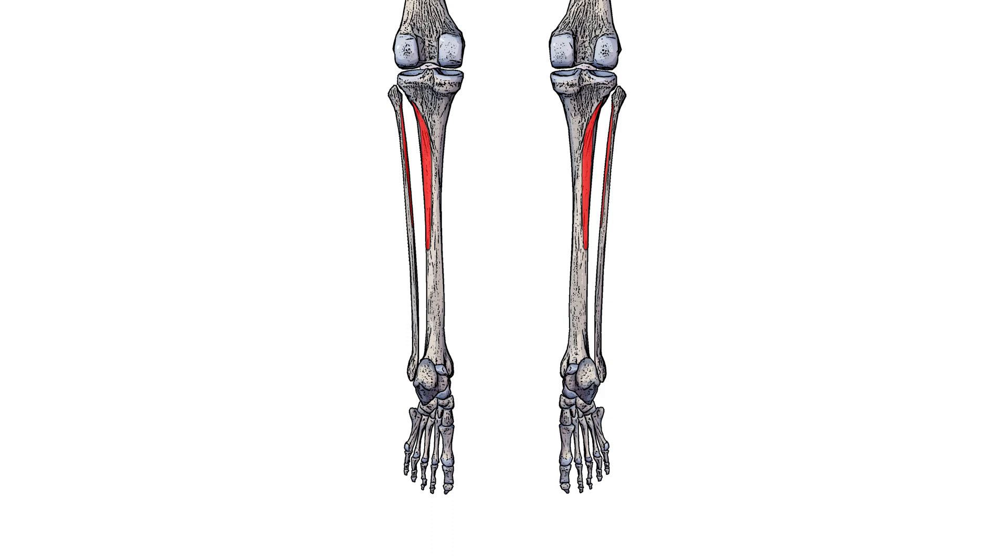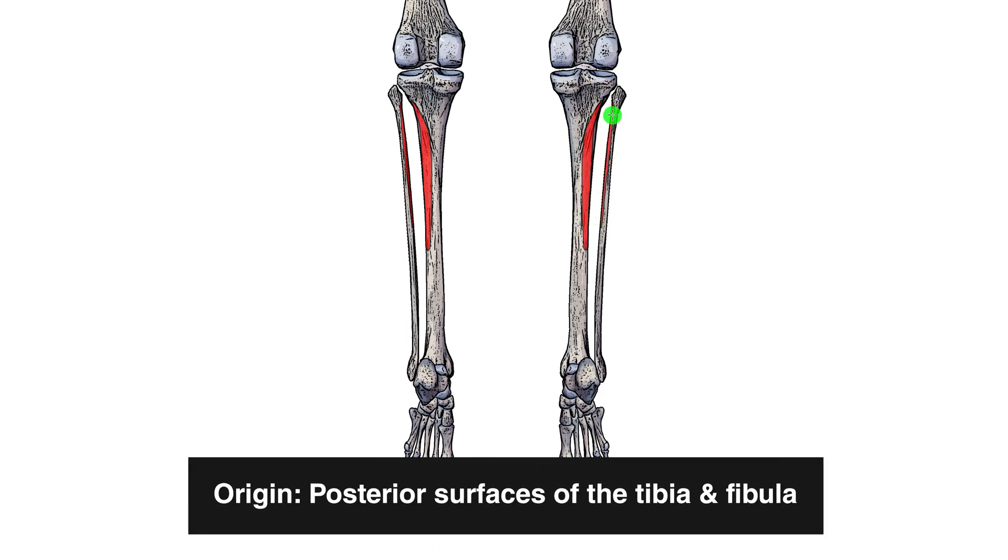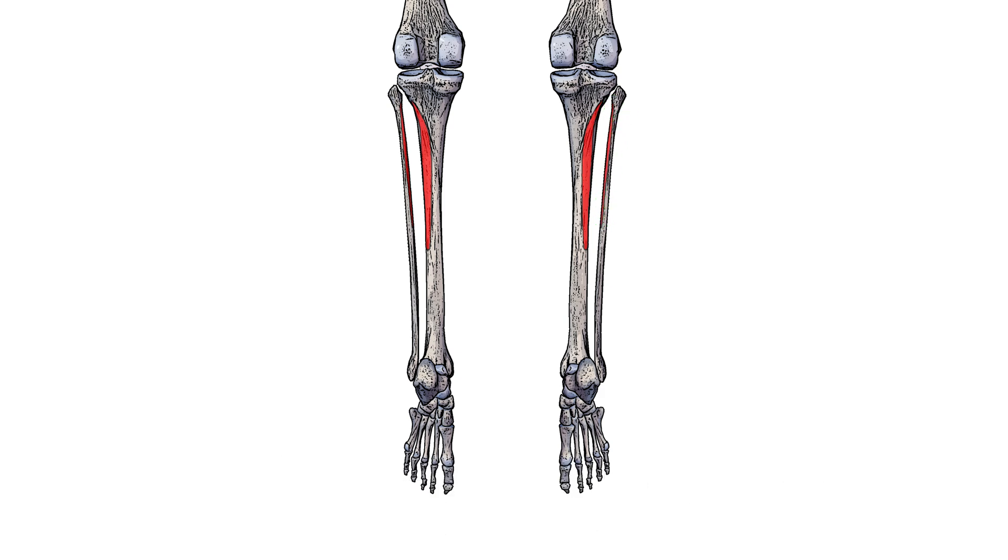So let's take a look at the origin next. I've marked that out here in red on either side, and you can see that's going to be on the posterior surface of the tibia here and also on the posterior surface of the fibula as well. You'll also notice that the origin point is around the upper half of both of those bones.